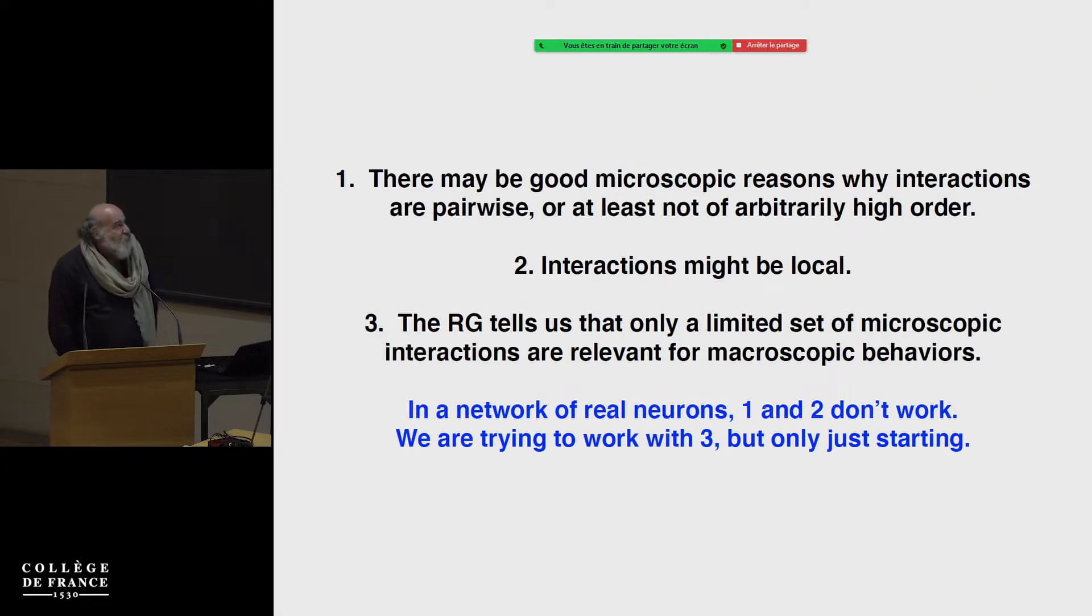So as Jim emphasized, there are a variety of reasons. One is, it might be that you actually understand the microscopic interactions, and they are pairwise, and that's the end of the story. That's really all you need to write down. So if you want, this is in the debate between a kind of reductionist view and a view of emergence, this is leaning on the side of reductionism. I went and I understood all the microscopic interactions, they really are pairwise, so there can only be n squared terms in the model. Another possibility, which is also very familiar in physics, is that interactions can be local.